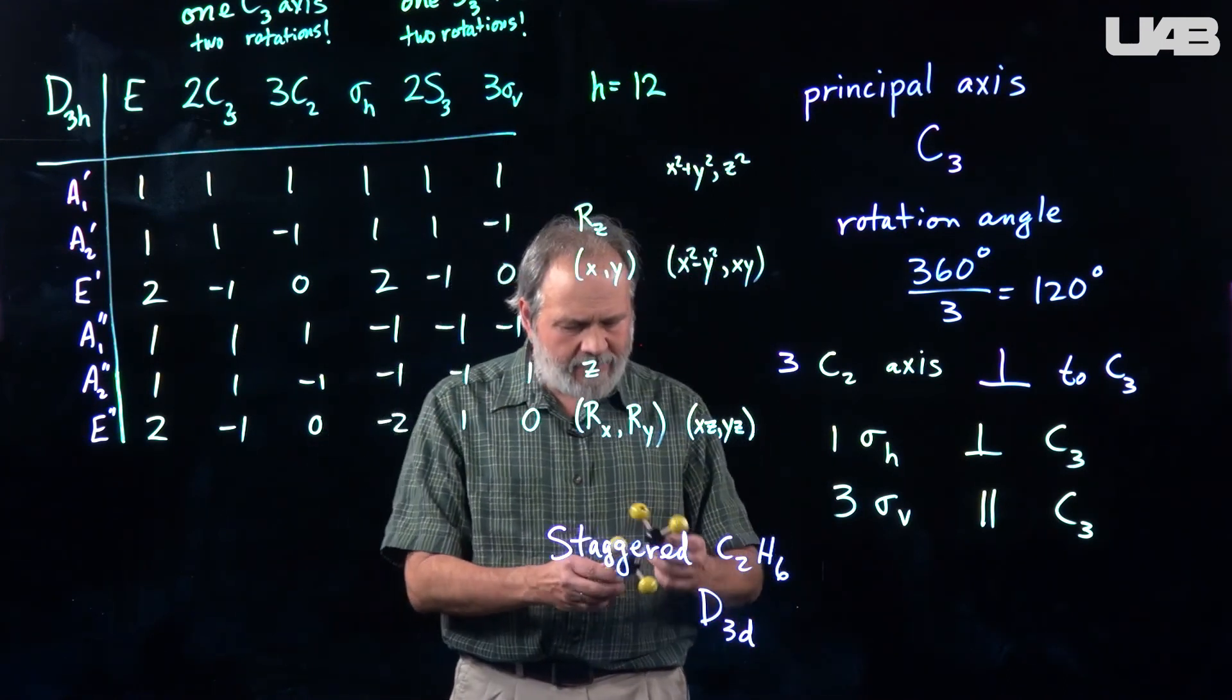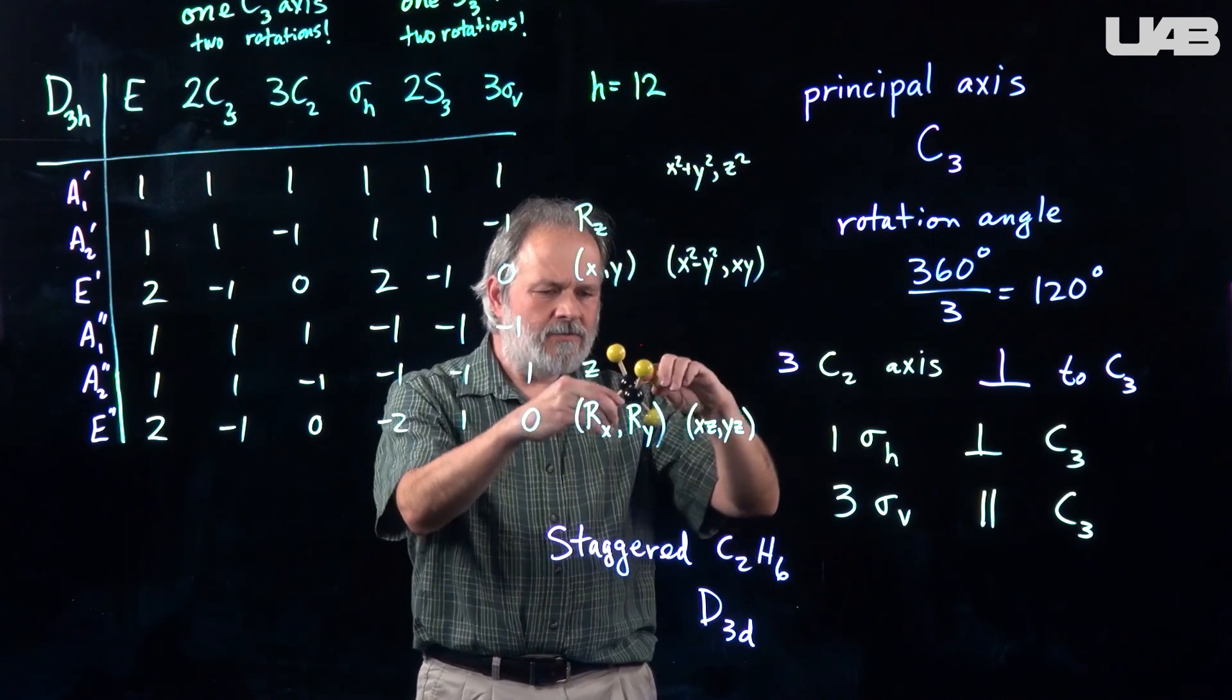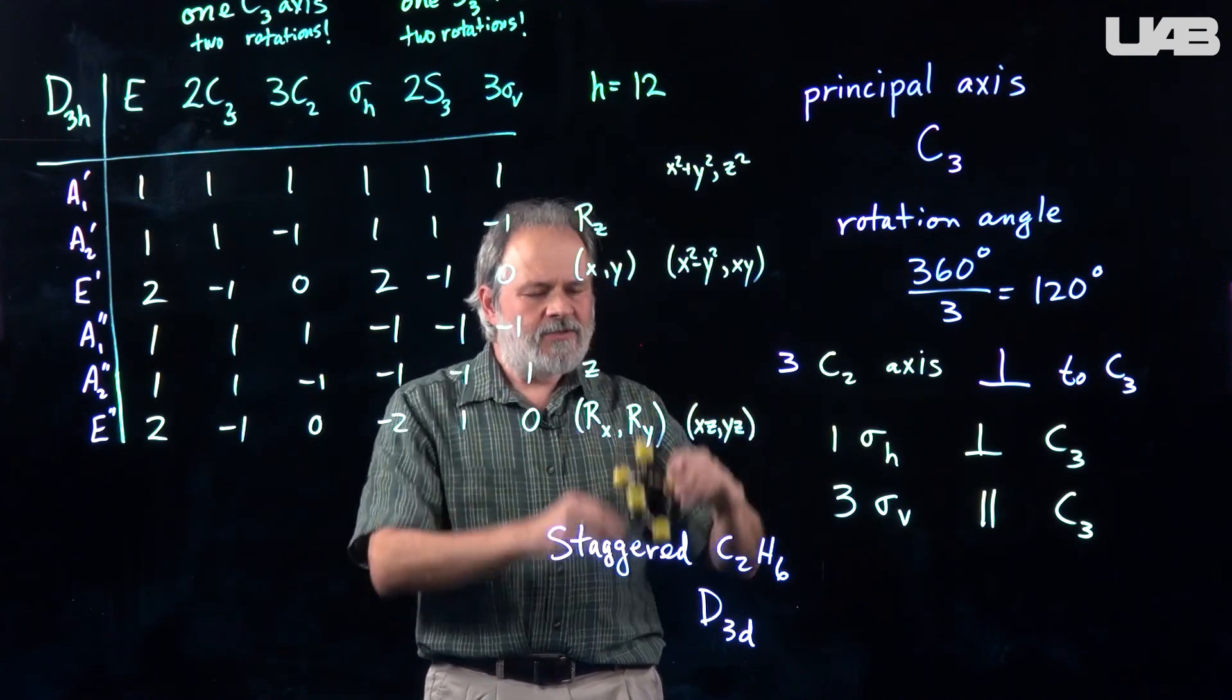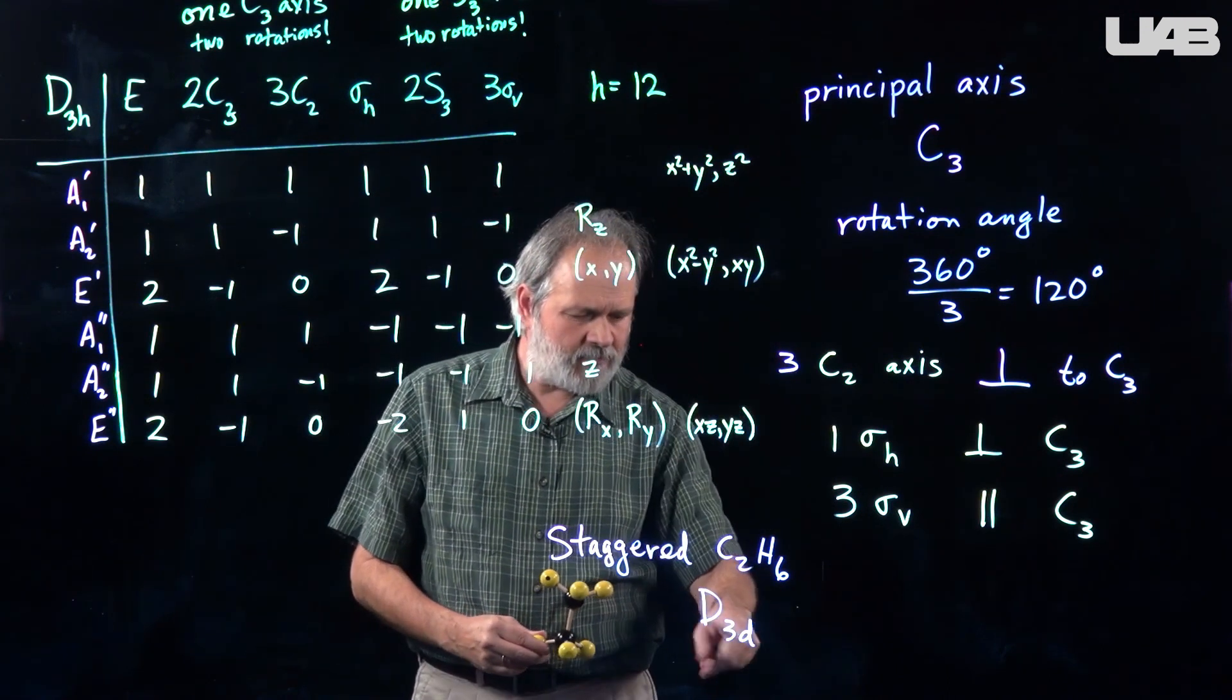So, this happens with all eclipsed and staggered compounds. If they're eclipsed, you'll wind up with something like D3H. If they're staggered, you wind up with something like D3D.